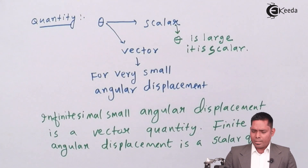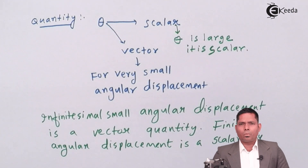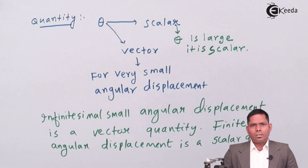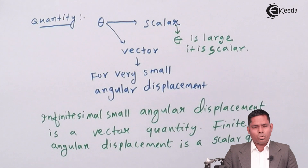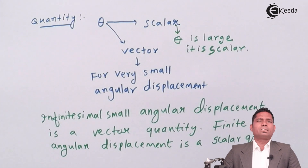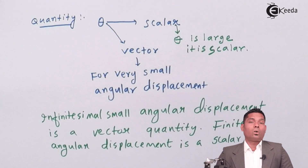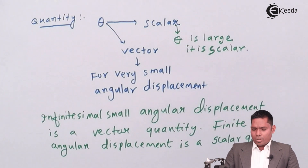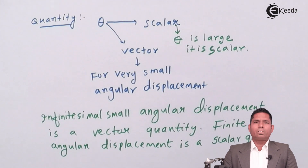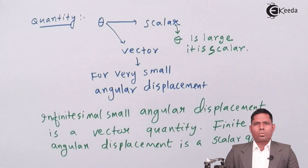In both situations, angular displacement has magnitude as well as direction. However, in the case of finite angular displacement (scalar), it does not obey the law of vector addition. So if it has direction, how do we find the direction of a particle moving in a circular path? We use the right-hand thumb rule.